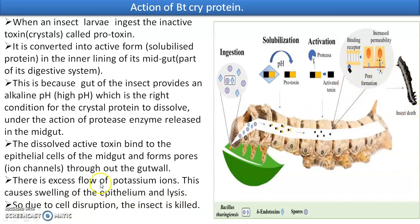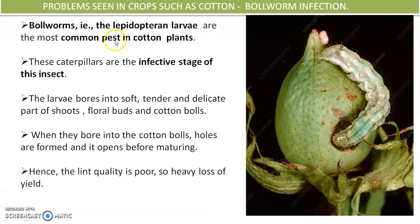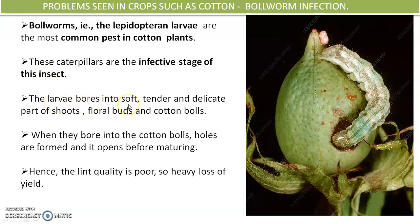This is how cry protein kills insects, and understanding this mechanism was used to solve a huge problem. Insects attack many crops such as cotton, corn, and brinjal. Cotton mainly gets boll worm infection — boll worms are the larvae, especially of Lepidopteran insects, which are the most common pest in cotton plants. These caterpillars are the infective stage; they bore into the soft, tender, and delicate parts of the shoot, floral buds, or cotton bolls.